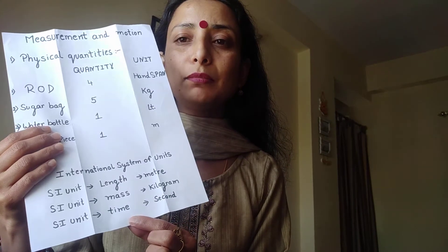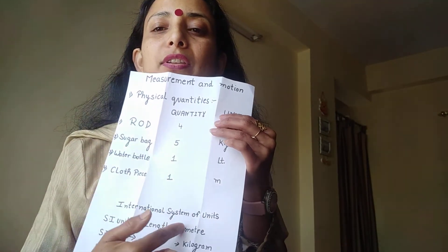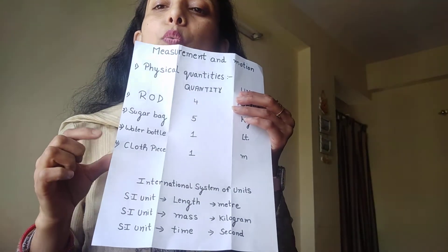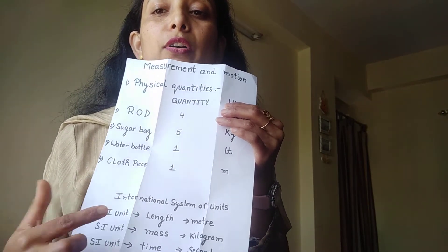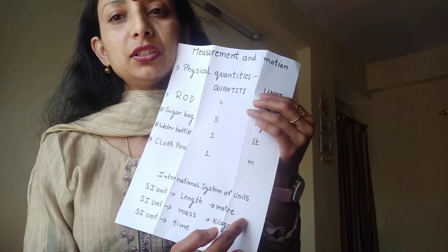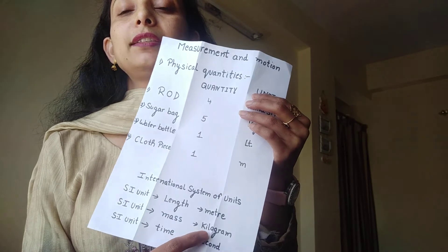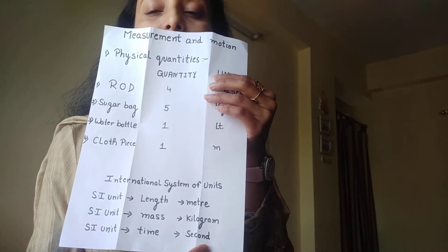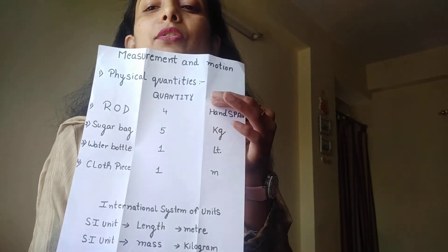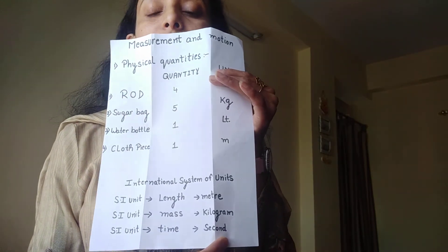To make these measurements accepted all over the world, standard international units were set for all three basic physical quantities: length, mass, and time. An international system of units — the SI system — was accepted worldwide. The SI unit for length is the meter, for mass it is the kilogram, and for time it is the second. Throughout the world, these units are accepted and measurements are done accordingly.